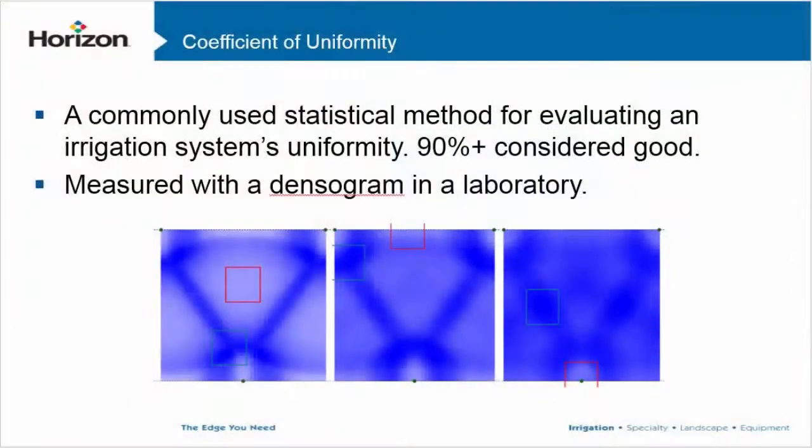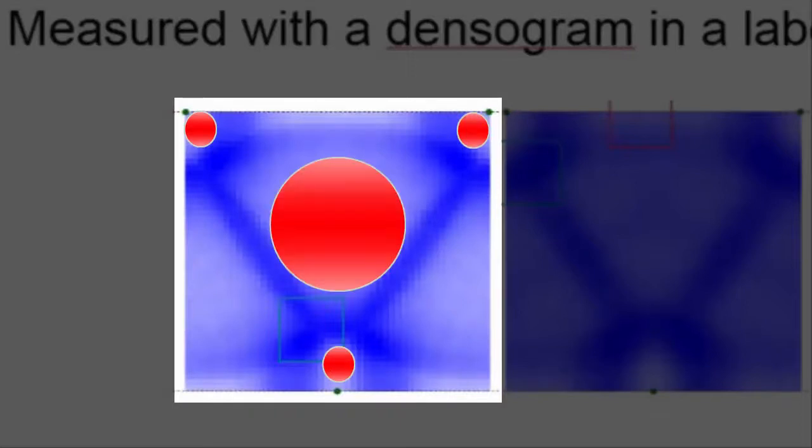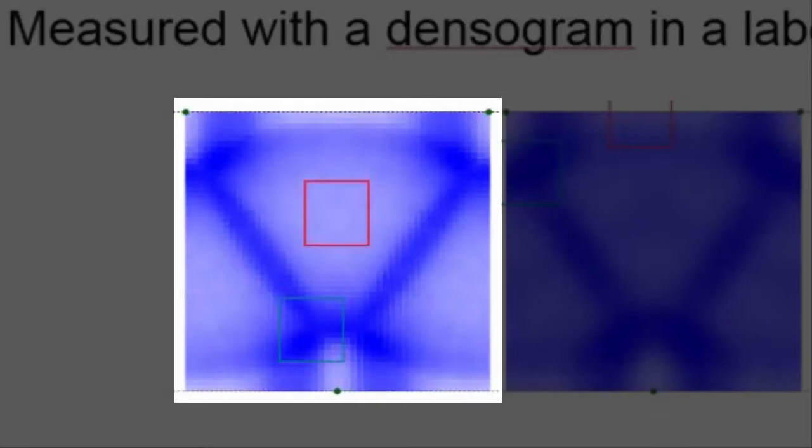Distribution uniformity is the spacing. This system is a gear drive rotor system set up on triangle spacing. True to fashion, you've got dry spots here, here, and here. We traditionally call this a stretched system because this sprinkler head is not watering that one over there.